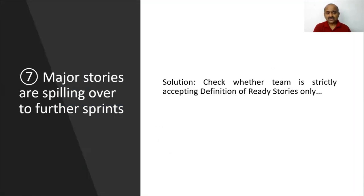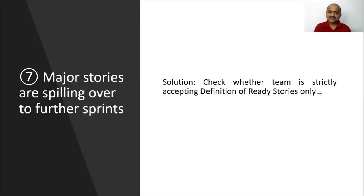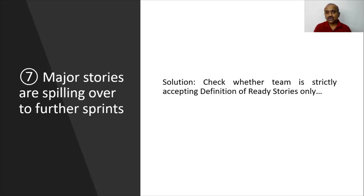Anti-pattern seven is major stories spilling over to further sprints. The reason can be that the team is accepting stories that are not compliant with the definition of ready. Stakeholders promise to resolve constraints by day three or five, but they don't get resolved, causing stories to spill. You must strictly implement the definition of ready. Whatever story is not compliant with definition of ready should not be accepted. Apply back pressure on the product owner so you don't take half-cooked stories.